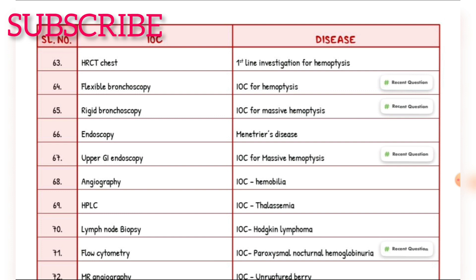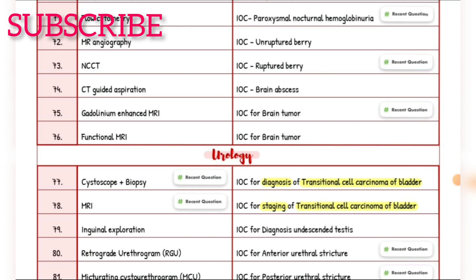Investigation of choice for Hodgkin's lymphoma — lymph node biopsy. Investigation of choice for paroxysmal nocturnal hemoglobinuria — flow cytometry. Investigation of choice for unruptured berry aneurysm — angiography. Investigation of choice for ruptured berry aneurysm — NCCT brain. Investigation of choice for brain abscess — CT-guided aspiration. Investigation of choice for brain tumor — MRI (including functional MRI).